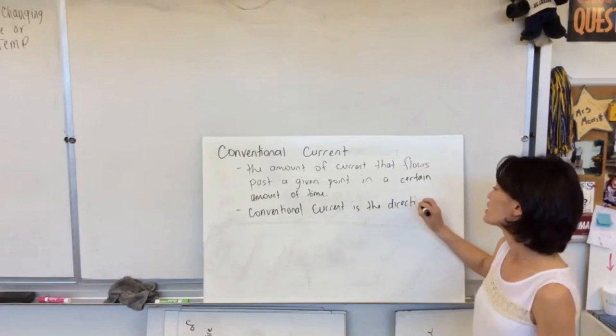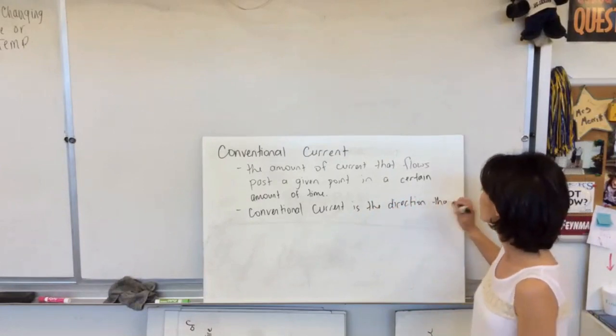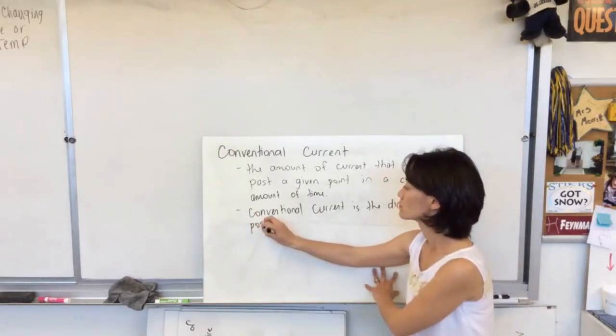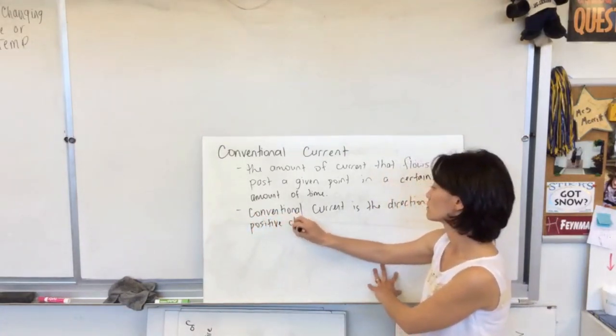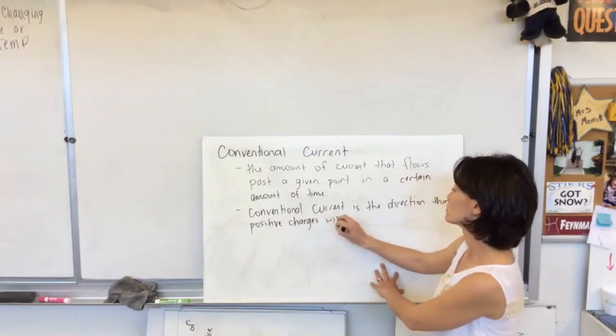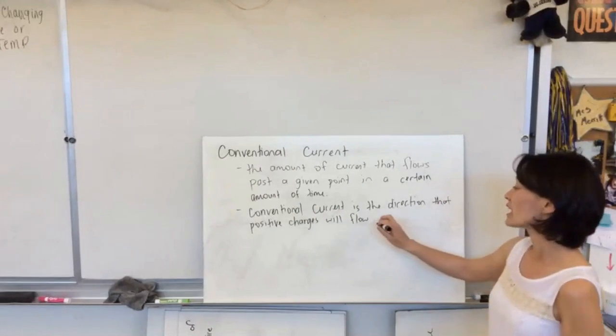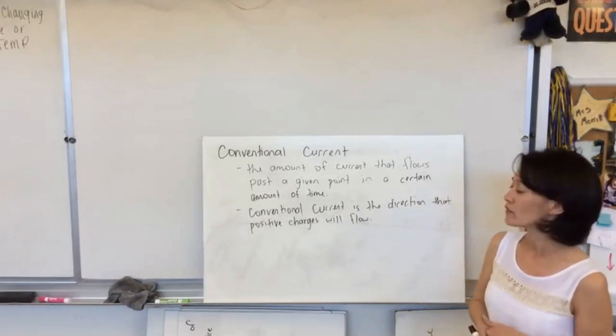And we just kind of have to go with that definition. And so we just need to know that electron flow is actually opposite conventional current.